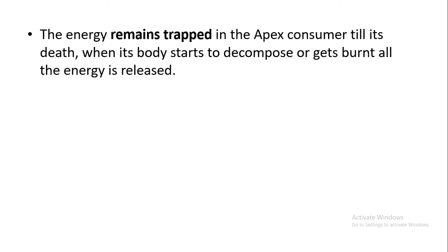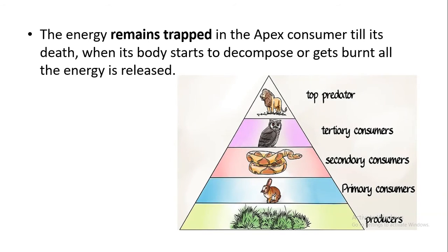The energy is going to remain trapped in the apex consumer — the top level consumer. When the apex consumer dies, the dead body is going to be broken down by bacteria through decomposition. Then the dead body is going to be decomposed and the energy is going to release into the atmosphere. You can see that from the basal level of producers, energy goes to the primary consumer, then secondary consumer, then tertiary, and then comes the topmost predator.